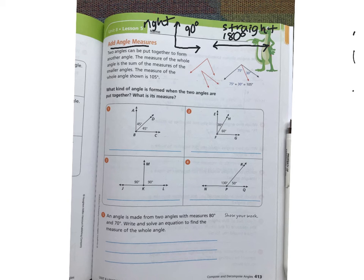The measure of the whole angle is 105. So what they're talking about is this example right here. They had two angles. One was 75 degrees and one was 30 degrees. If I put those together, I add 75 plus 30, and that equals 105 degrees. So that's what you're going to be doing down below is putting two angles together and adding them up.